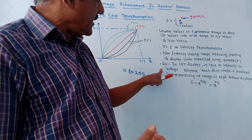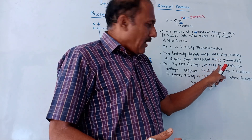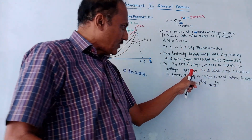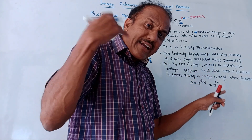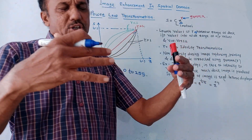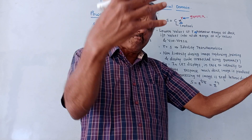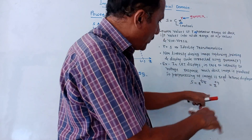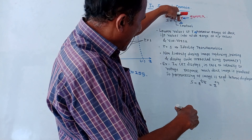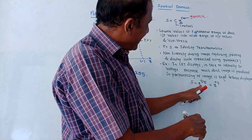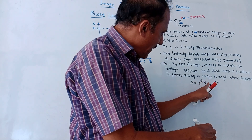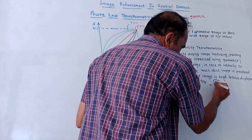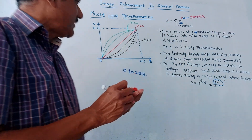A practical example is the CRT (cathode ray tube) display — the intensity-to-voltage response produces much darker images. To correct this, preprocessing is required before displaying, and the corresponding gamma value is 1/2.5 = 0.4, so s = r^0.4. By choosing this gamma value, we can correct the non-linearity. This is why gamma is called the correction factor.